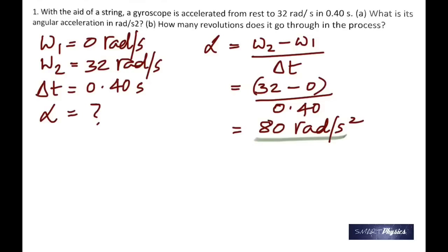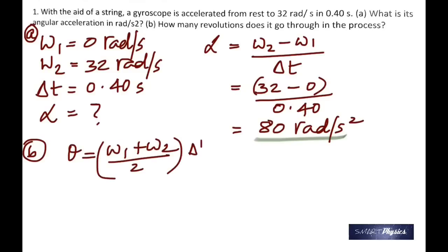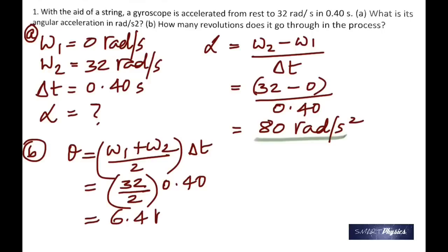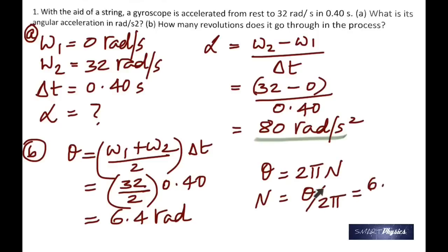How many revolutions does it go through? Use θ = average angular velocity × time to find the total angle. The angle covered in one revolution is 2π radians, so the total angle equals 2π × n, where n is the number of rotations. Making n the subject gives 6.4 / 2π, which is approximately 1 revolution.